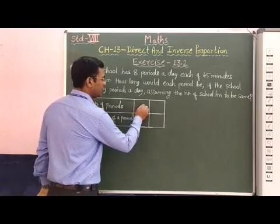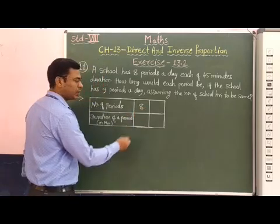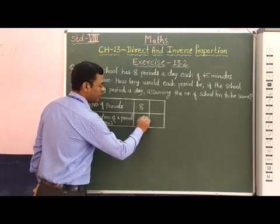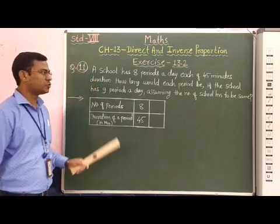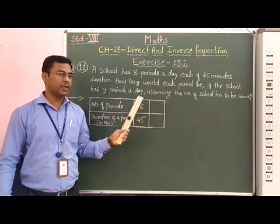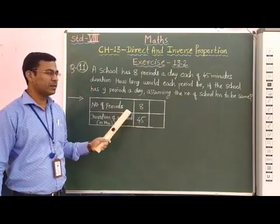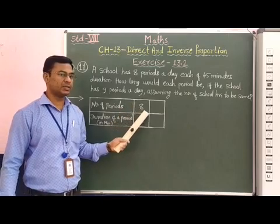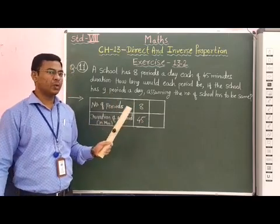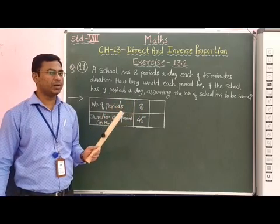If there are 8 periods, then duration of 1 period is 45 minutes. Now, it is asked that if in place of 8 periods there are 9 periods, then what is the duration of 1 period?